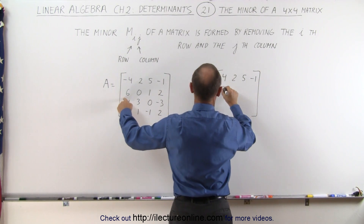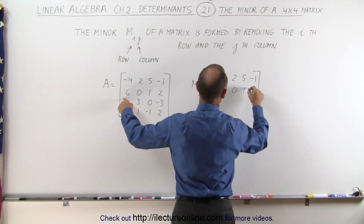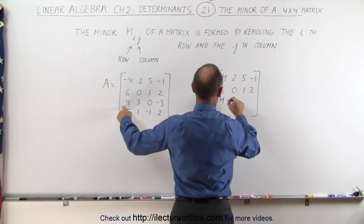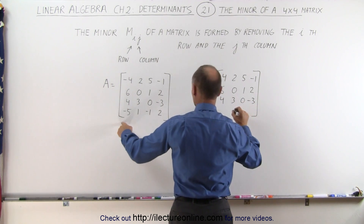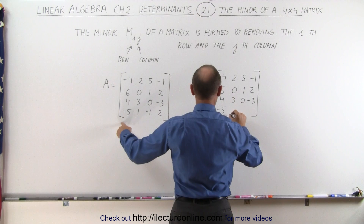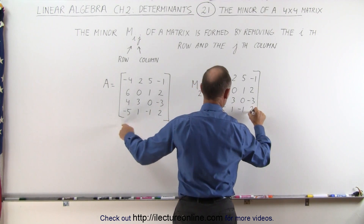We have 6, 0, 1, 2, 4, 3, 0, and minus 3. And the last row: minus 5, 1, negative 1, and 2.